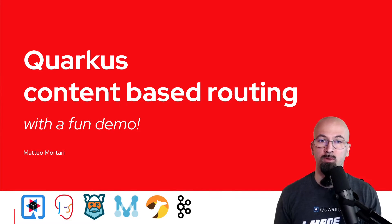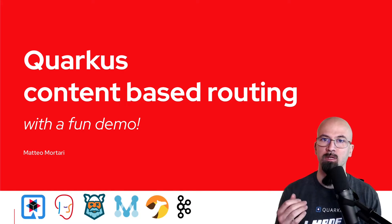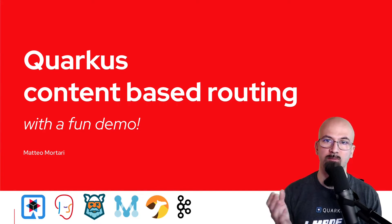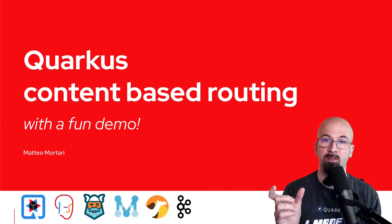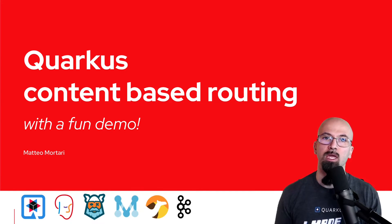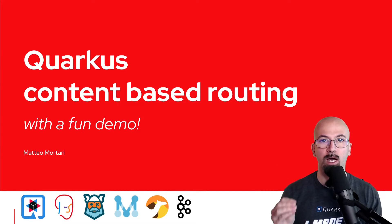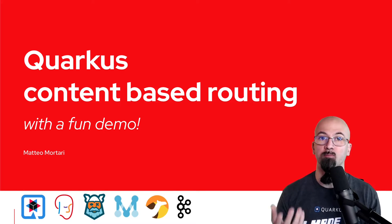Content-based routing is a common use case and we employ it when we want to dispatch messages coming from a streaming event source to different types of queues or buffers, depending on the content of the message or some metadata of the message itself. Hi, my name is Matteo. Today we're going to see, on top of Quarkus and other open source projects, how we can implement this use case of content-based routing.